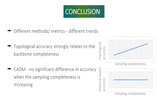By considering all the outcomes, we can conclude that topological accuracy strongly relates to backbone completeness, while distance-based methods show no significant difference in accuracy as sampling completeness increases. So, if the purpose of future research is taxonomic revision, then topological accuracy is important, as accuracy strongly relates to sampling completeness. But if the purpose is finding large-scale tree properties and diversity, then distance matrices are important, as there is no significant difference in accuracy when completeness of sampling increases.